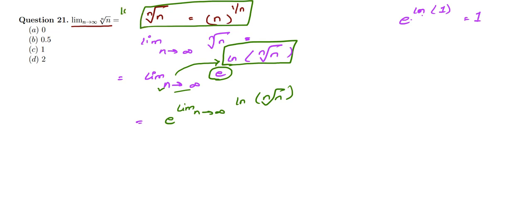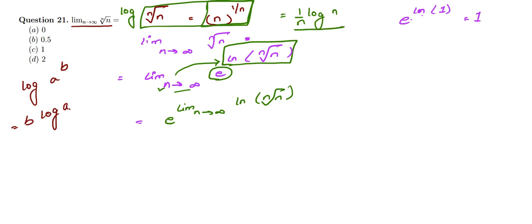Now, applying the logarithm power rule — log(a^b) = b·log(a) — we can write ln(n^(1/n)) as (1/n)·ln(n). So the expression becomes e raised to the power of limit n→∞ of (1/n)·ln(n).